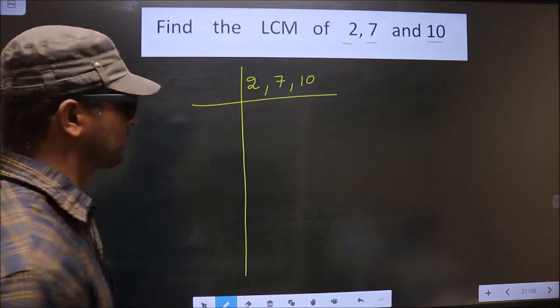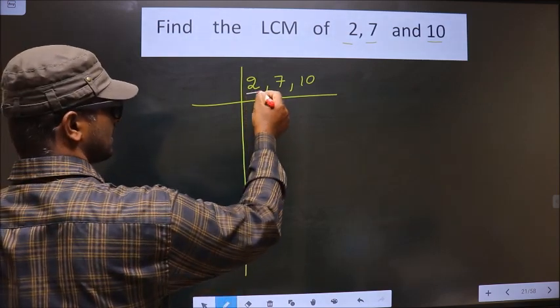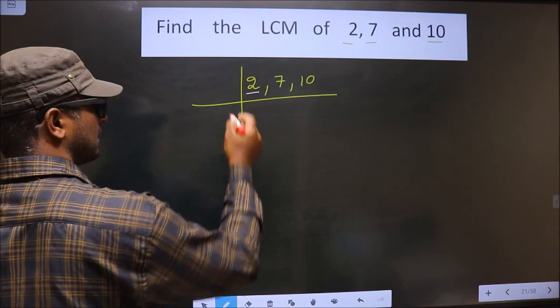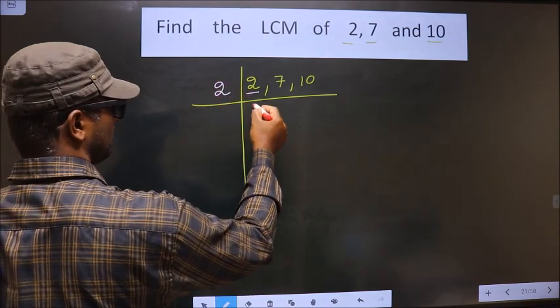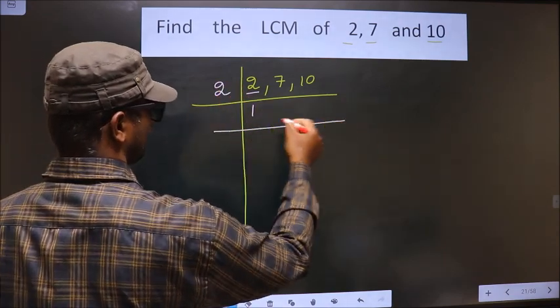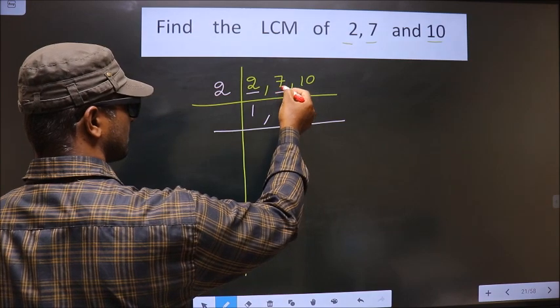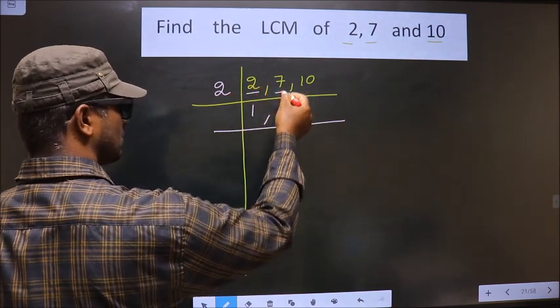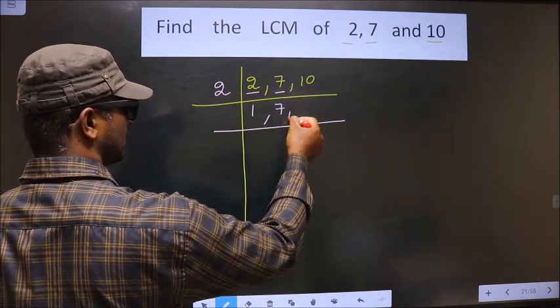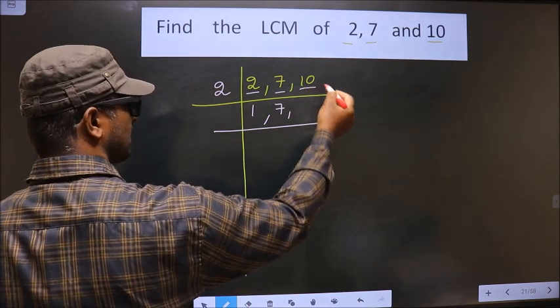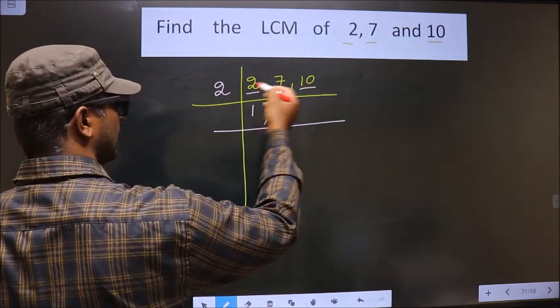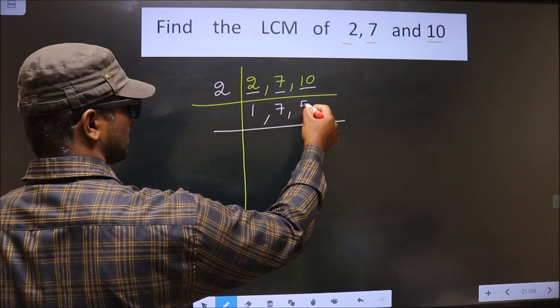Next. Here the first number is 2. 2 is a prime number. So we take 2 here. 2 once, 2. Next number is 7. 7 is not divisible by 2. So 7 you write as it is down. Next number is 10. When do we get 10 in 2 table? 2, 5 is 10.